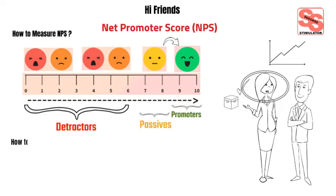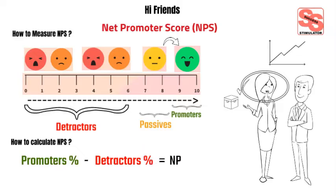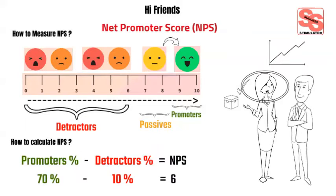Let's look at how to calculate and measure Net Promoter Score. Total percent of promoters minus total percent of detractors equals Net Promoter Score. The total percent of people who would recommend your brand, minus the total percent of those who wouldn't, equals your Net Promoter Score. For example, 70% promoters minus 10% detractors equals 60 — that is your NPS score.